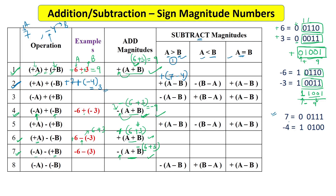In binary, seven is represented as 0111 and minus four has sign bit 1 with magnitude 0100. We subtract the magnitudes: 0111 minus 0100. Working through: 1 minus 0 is 1, 1 minus 0 is 1, 1 minus 1 is 0, and 0 minus 0 is 0 — giving magnitude 0011, which is three. The result sign is positive, so we prepend 0. The final answer is 00011, representing positive three.